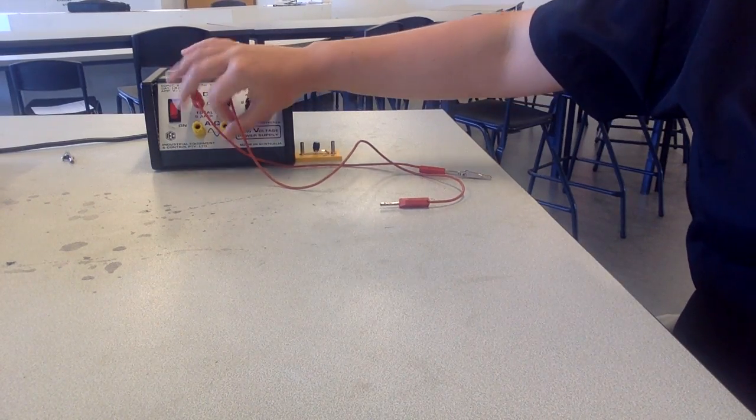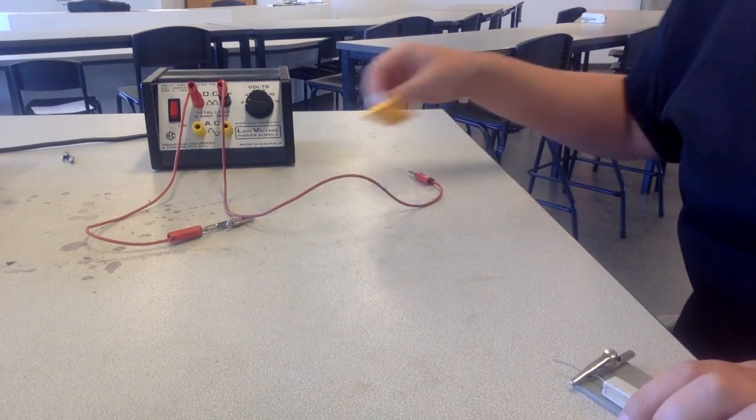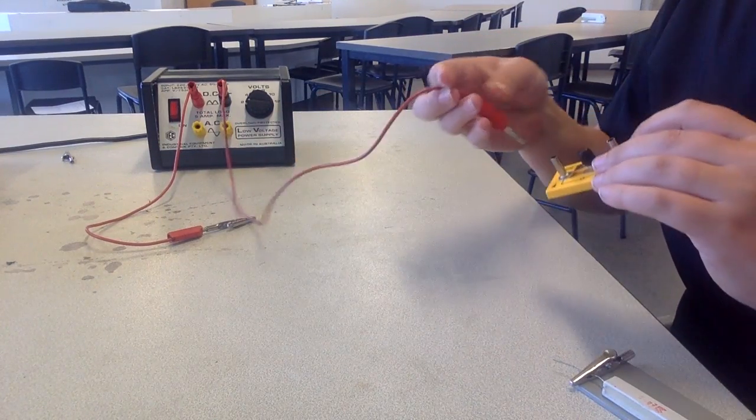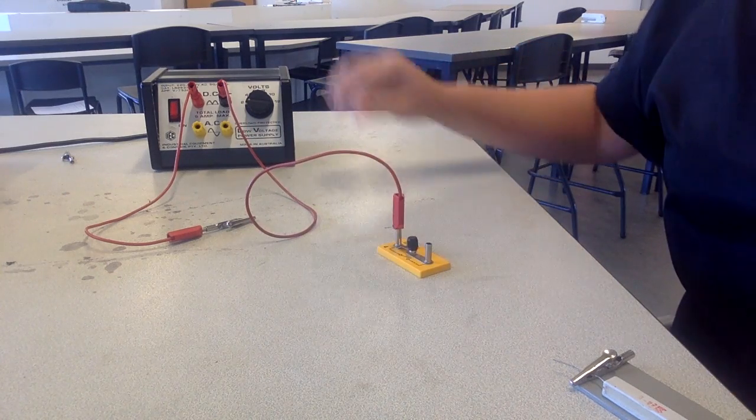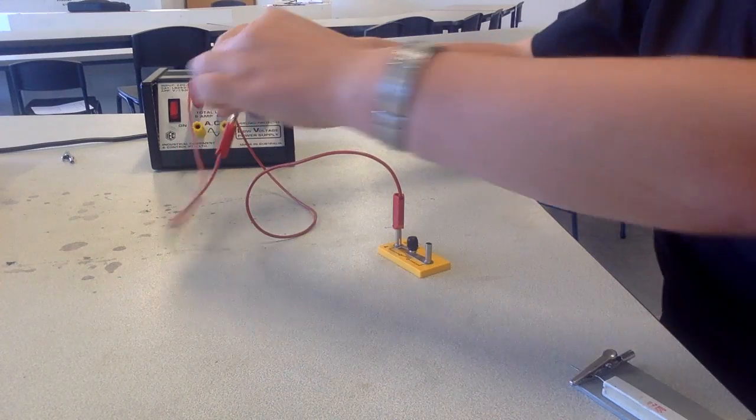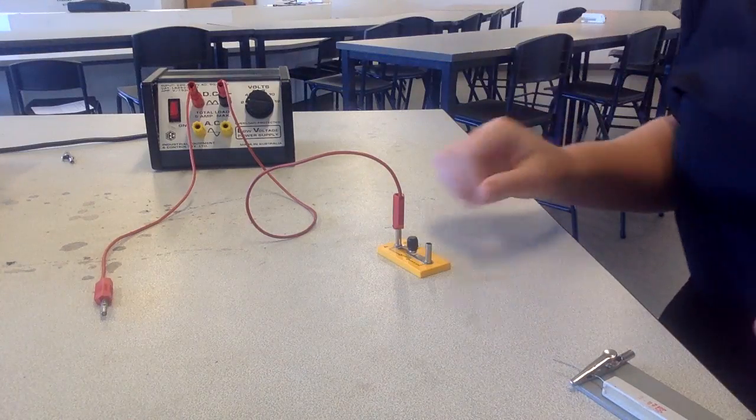So to start off, first of all you need to have a power pack and we'll connect it in DC. We're going to add a switch to our circuit. It's always good to have a switch so that if you leave the power pack on there won't actually be current flowing through the circuit. Just had an excess crocodile clip there.